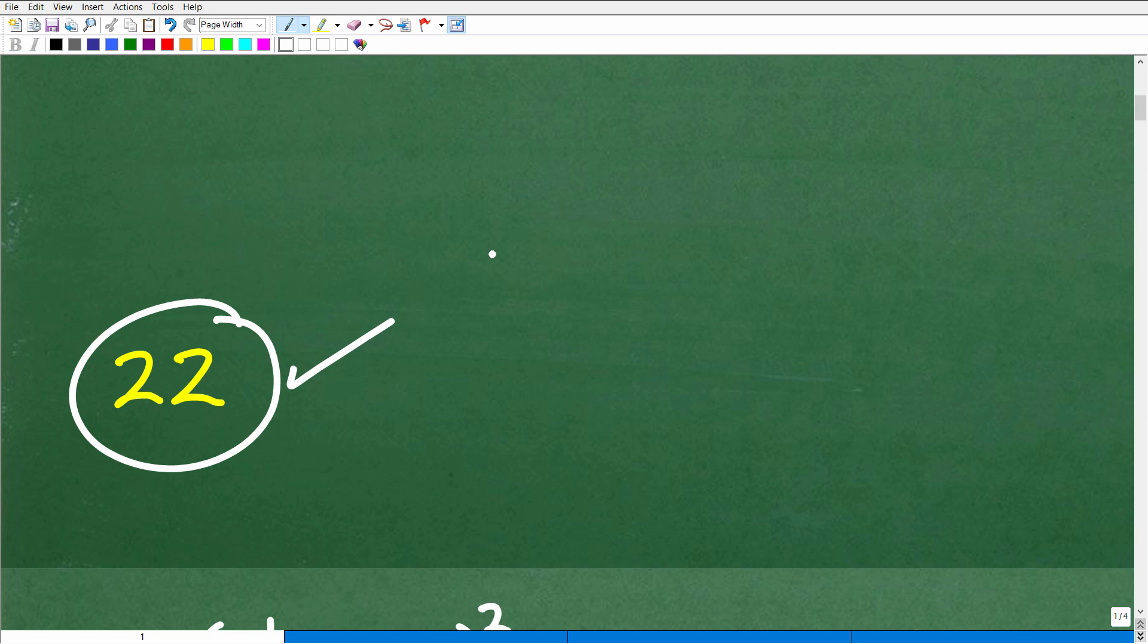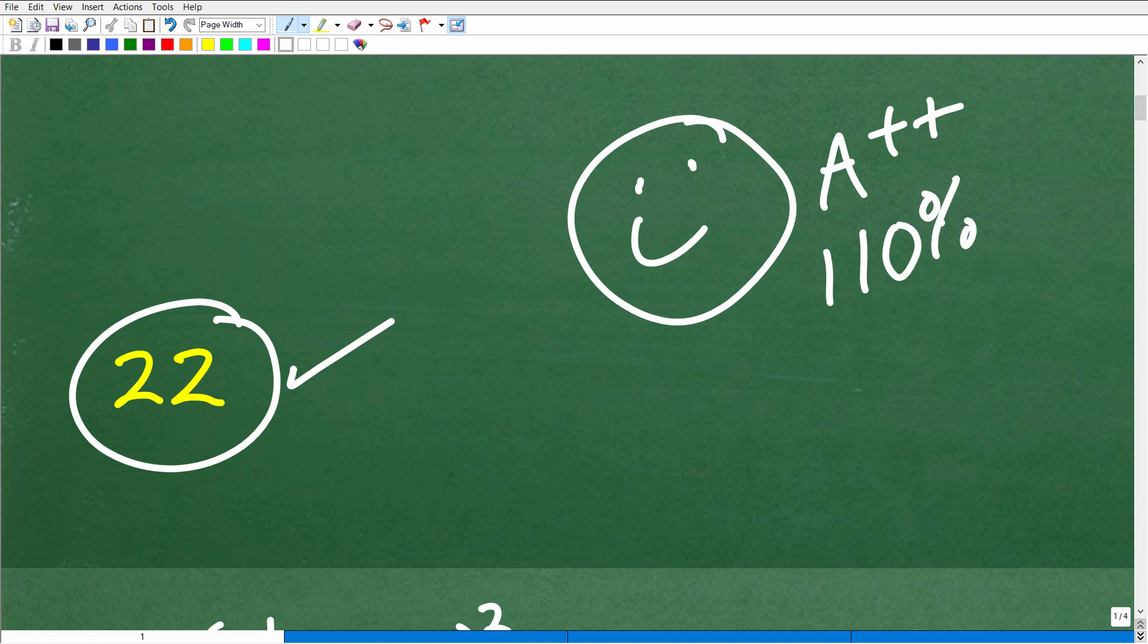Okay, so how did you do? Well, if you got this right, that's very, very good. Matter of fact, I'm going to give you a nice little happy face, an A++. I don't normally give A++. Matter of fact, I don't even normally give anything over 100%. But nowadays, you can get all kinds of crazy grades on test exams, etc.